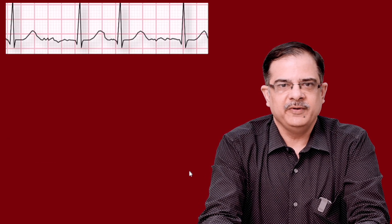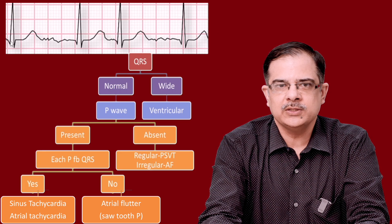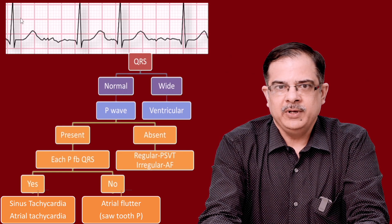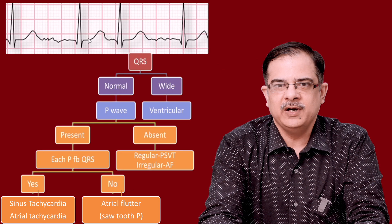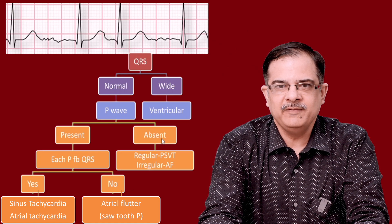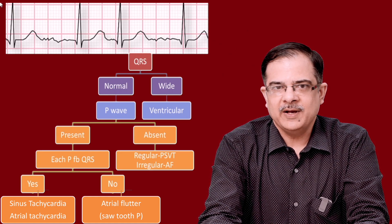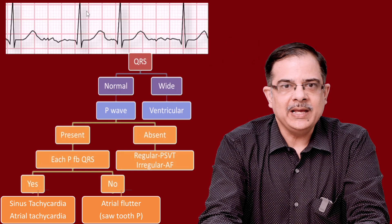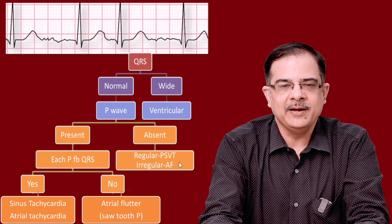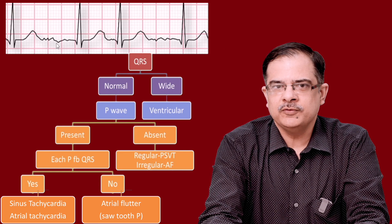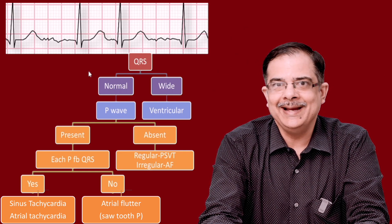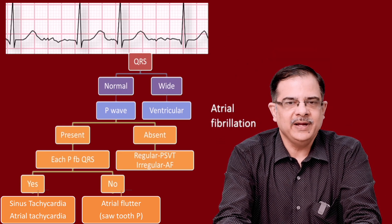Next ECG, applying the same flowchart: QRS complex is less than 3 mm — normal. Looking for P waves between two QRS complexes: only one definitive wave is present, which is a T wave — no definitive P wave is present, so P wave is absent. Looking at the RR interval: the RR intervals are varying, indicating irregular heart rate. Irregular heart rate with absent P waves means atrial fibrillation. You may also see small fluctuations in the baseline — fibrillatory f waves — but these are not mandatory for diagnosis.